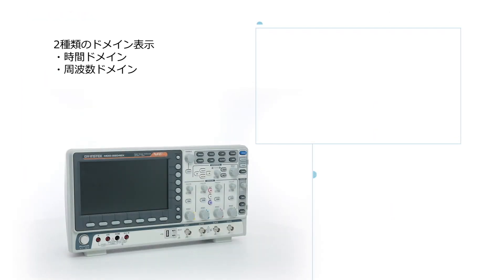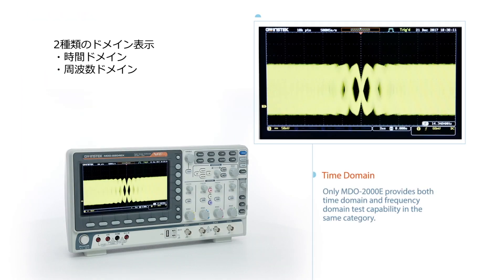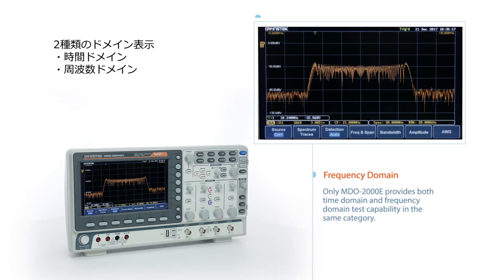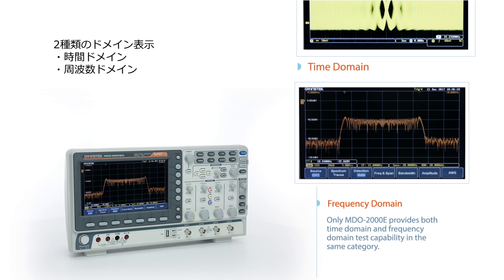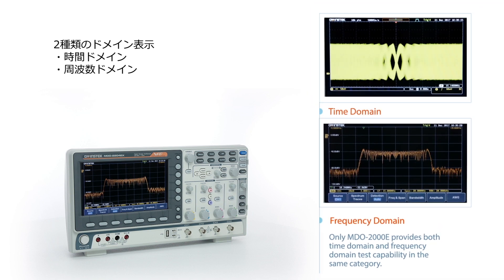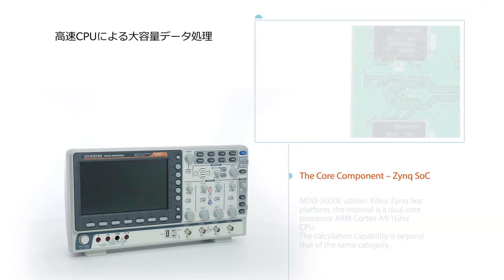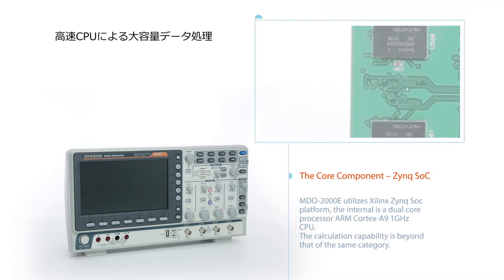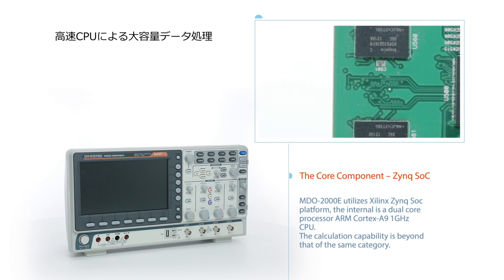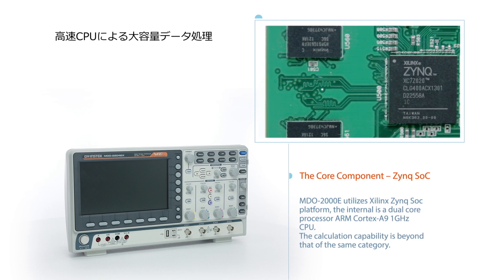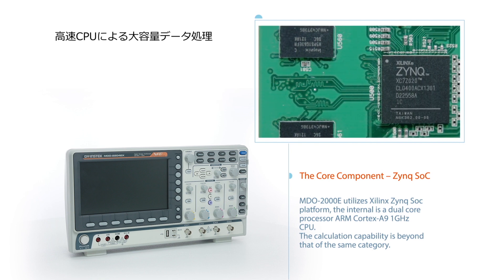Only the MDO-2000E provides both time domain and frequency domain test capability in the same category. It utilizes a Xilinx Zynq SoC platform with an internal dual-core ARM Cortex-A9 1 GHz CPU, and its calculation capability is beyond that of the same category.